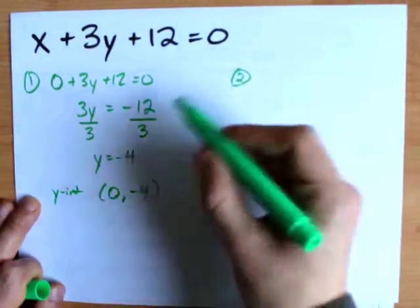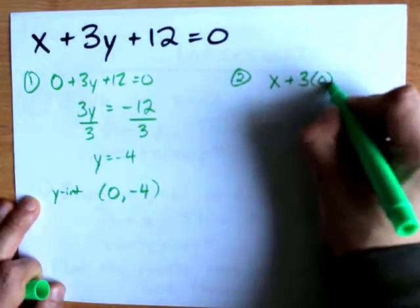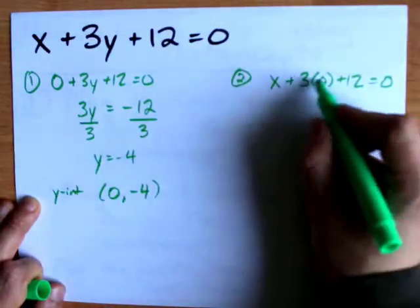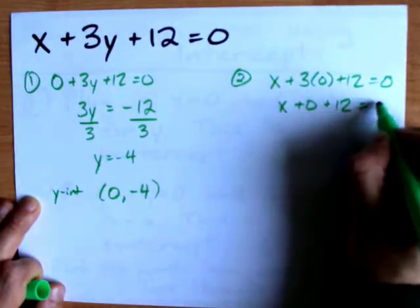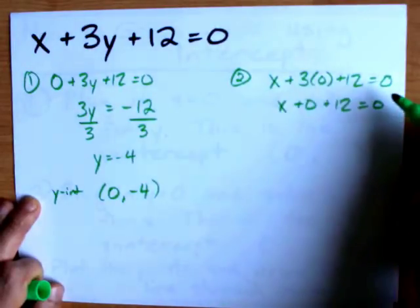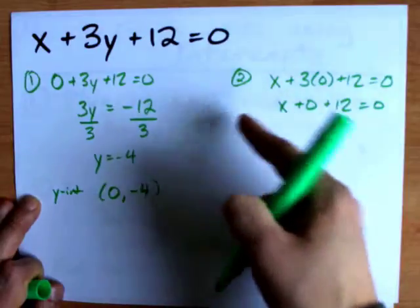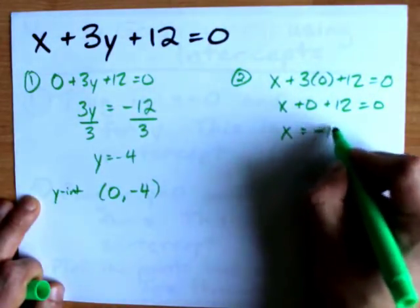Step two was to plug in 0 for y. x plus 3 times 0 plus 12 equals 0. Now 3 times 0 is 0, so I will do that multiplication now. In fact, multiplication is the first thing to do here with BEDMAS. I'm going to keep x on the left, move all my numbers to the right. I have x equals negative 12.